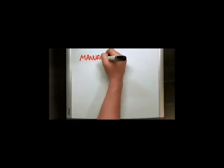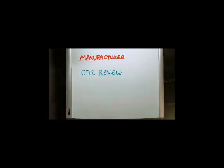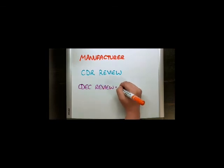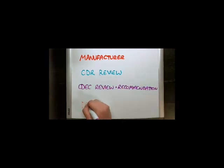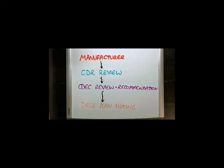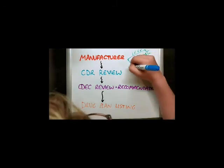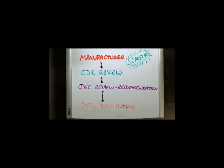In summary, the review process consists of the manufacturer submission, the CDR processing, the CDEC review, and their final recommendation. The goal of this process is to decide whether or not a drug should fall under public funding. However, the CDEC final recommendation is non-binding, meaning each drug plan still gets to make its own decision on how the drug will be listed.